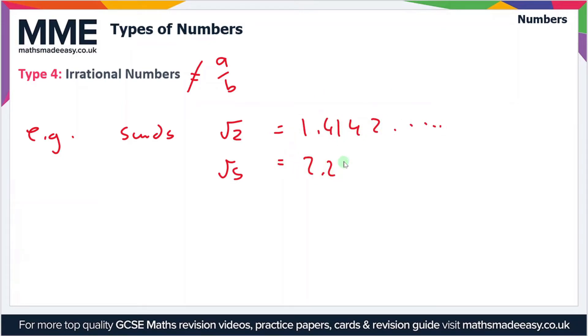These decimals go on forever and never repeat themselves, so they're non-recurring decimals. Another example would be pi, which is 3.14159... and so on. These are all examples of irrational numbers which can't be written as a fraction made up of integers a and b.